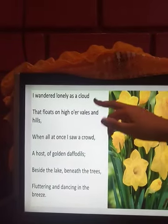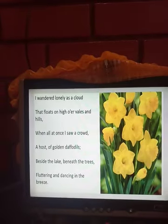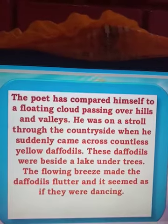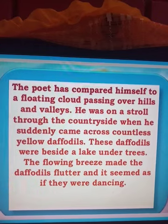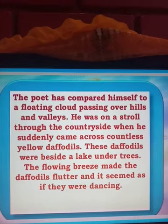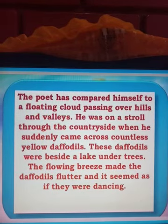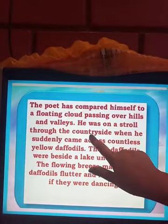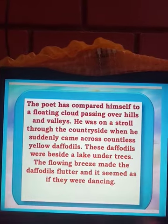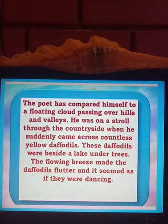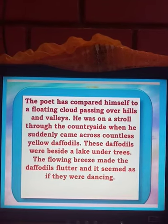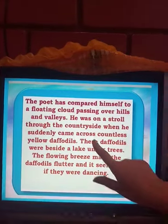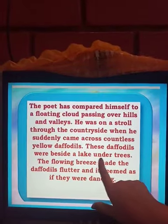Let us understand what this first stanza is about. The poet has compared himself to a floating cloud passing over hills and valleys. He was on a stroll through the countryside when he suddenly came across countless yellow daffodils. These daffodils were beside a lake, under trees.